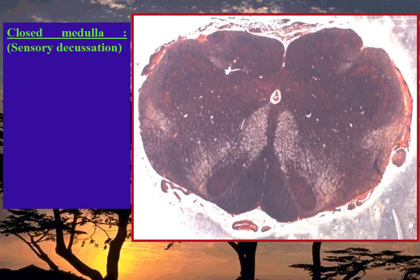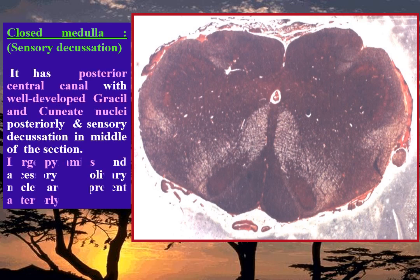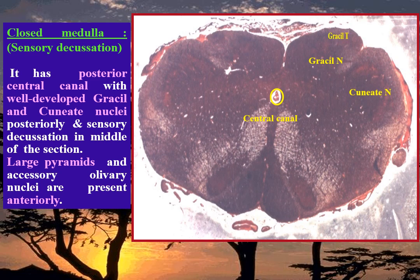Closed medulla oblongata at sensory decussation — the middle level. It has a posterior central canal with well-developed gracile and cuneate nuclei, and small gracile and cuneate tracts. Sensory decussation is present in the middle of the section. Large pyramids together with accessory olivary nuclei are present anteriorly.